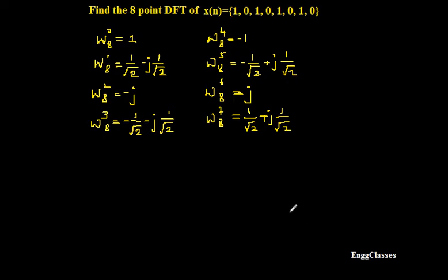Let the given sequence x(n) be 1, 0, 1, 0, 1, 0, 1, 0. So this is the sequence. The task is to find X(k), that is the DFT. And since it is 8-point DFT, capital N must be equal to 8.